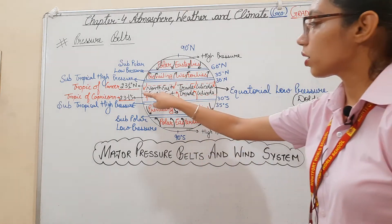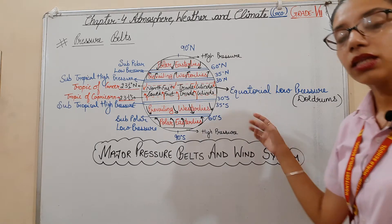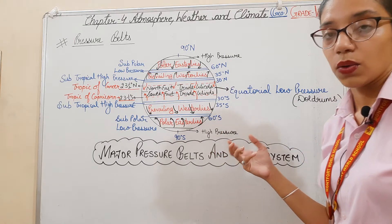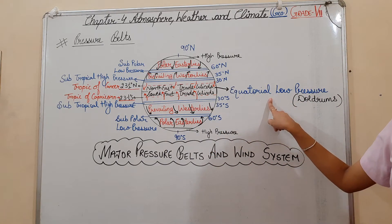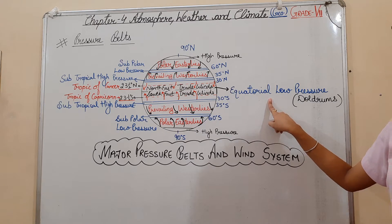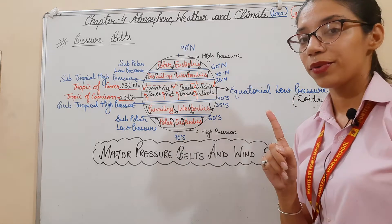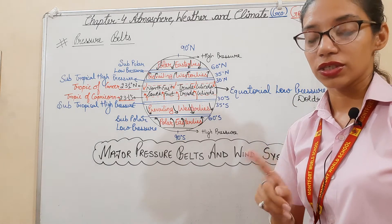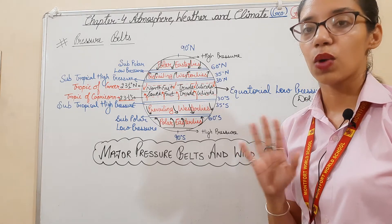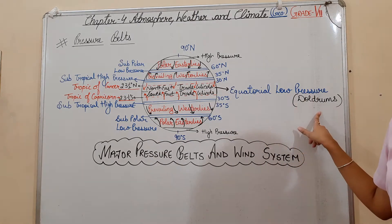This black line is your equatorial region. Here, the low pressure area is created due to high temperature. Due to high temperature at the equator, the low pressure area is created throughout the year. It is known as equatorial low pressure or doldrums.